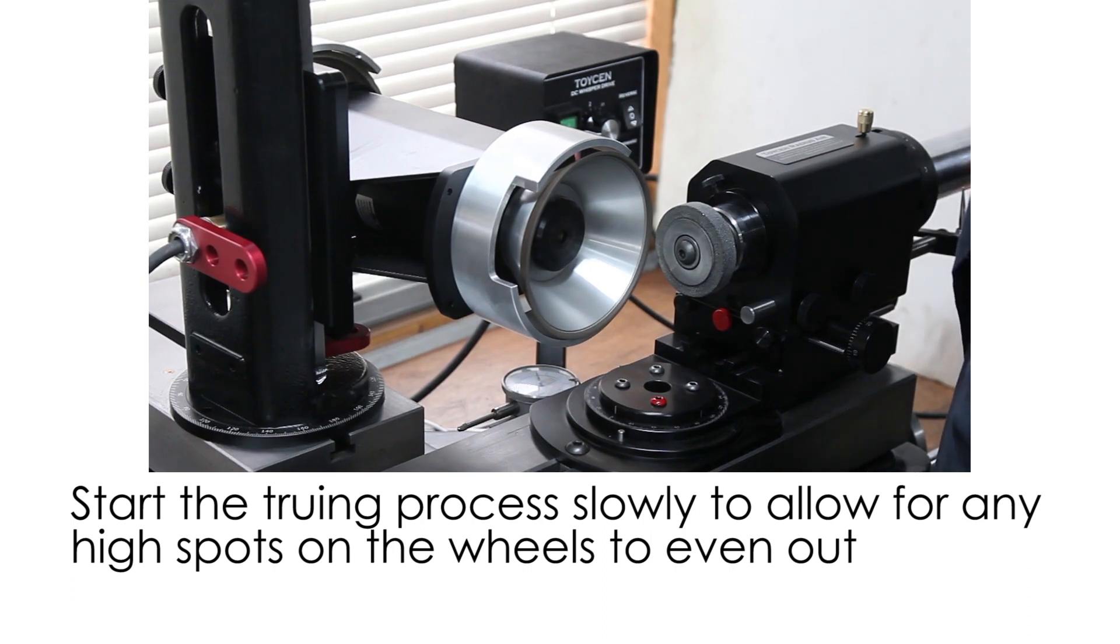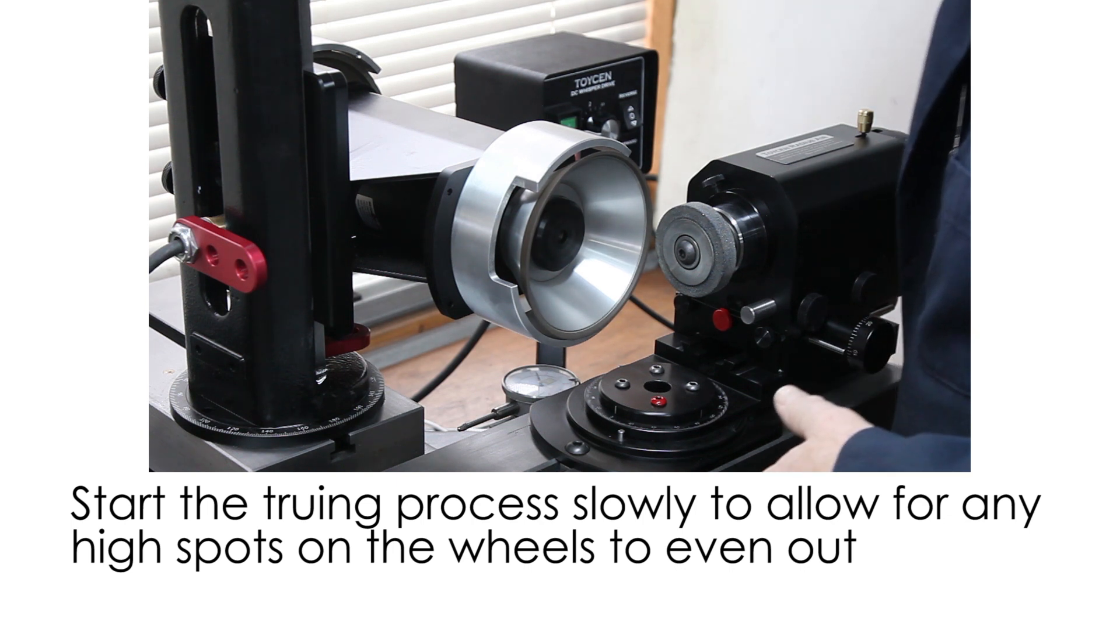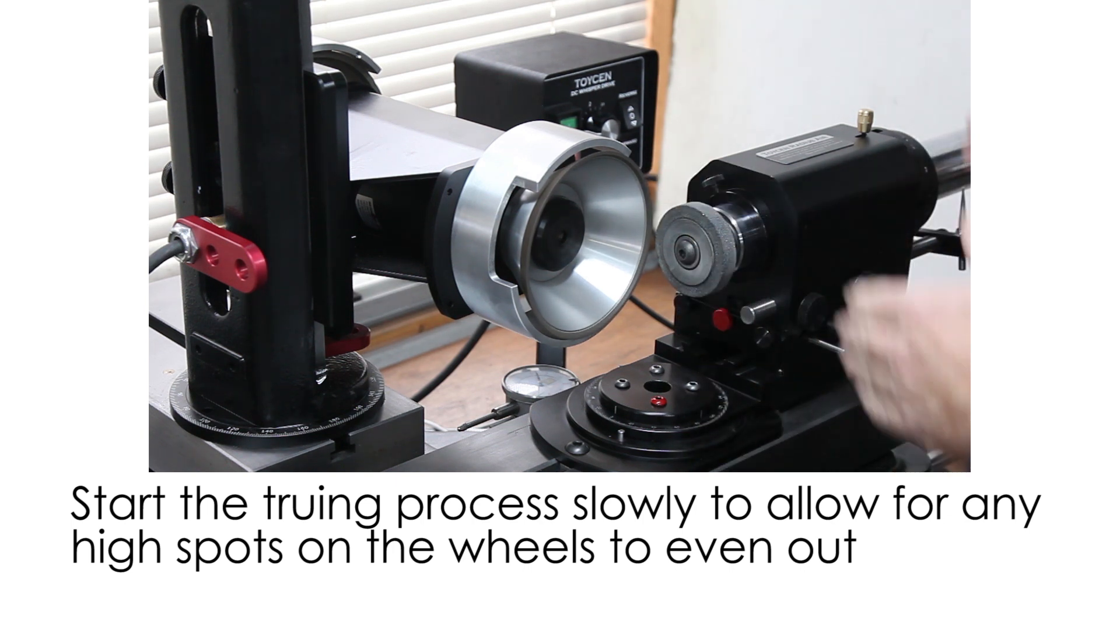So all we're going to do is bring the two wheels in contact. We're going to feed very slowly and we're just going to go back and forth until we get the shape that we want in this wheel, which is a little bit of an inside cone shape.